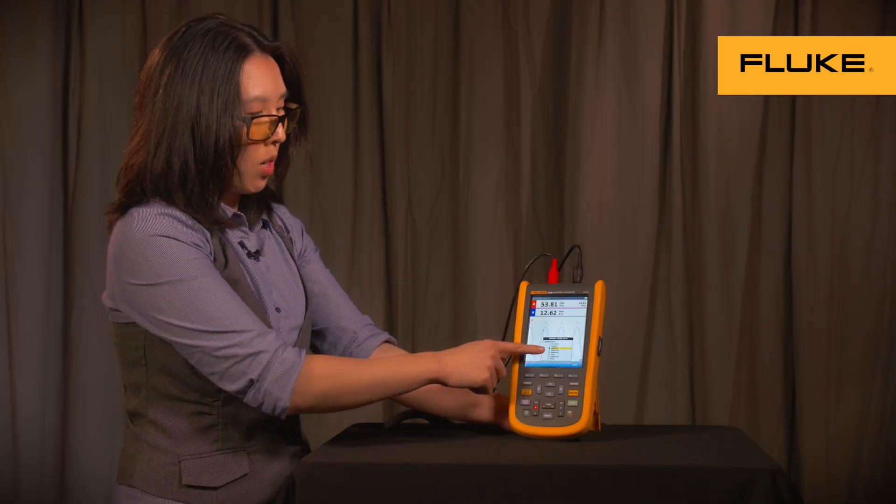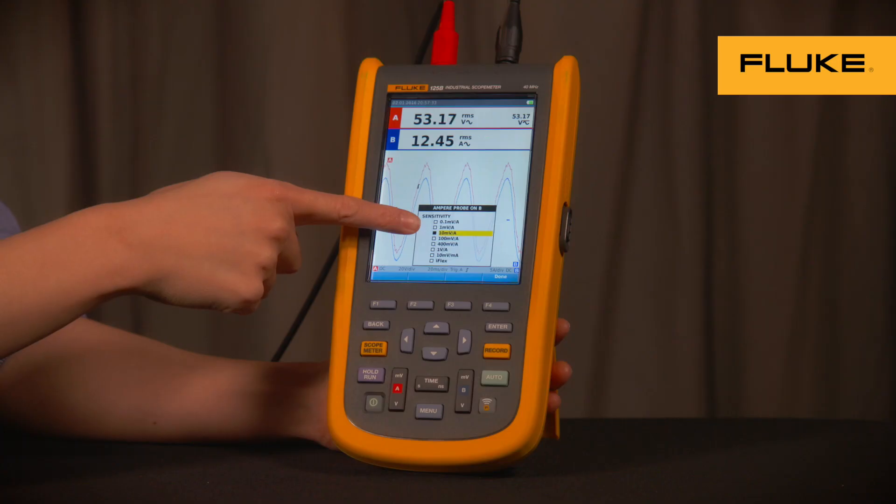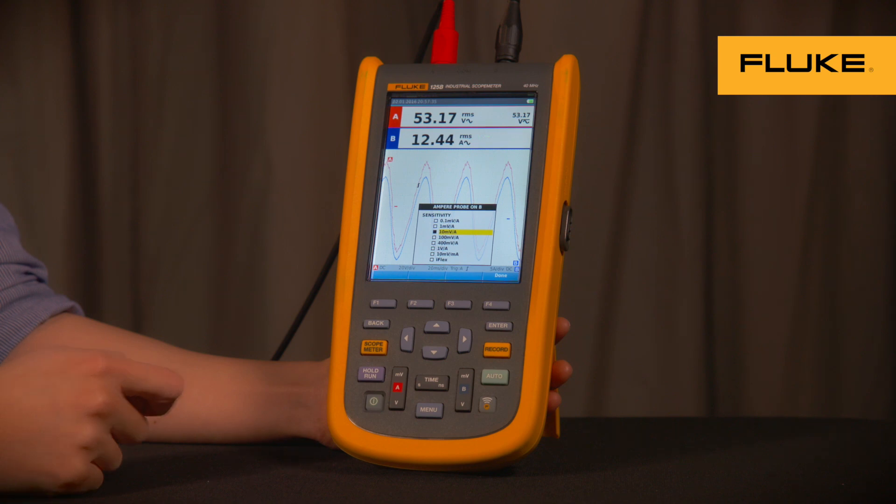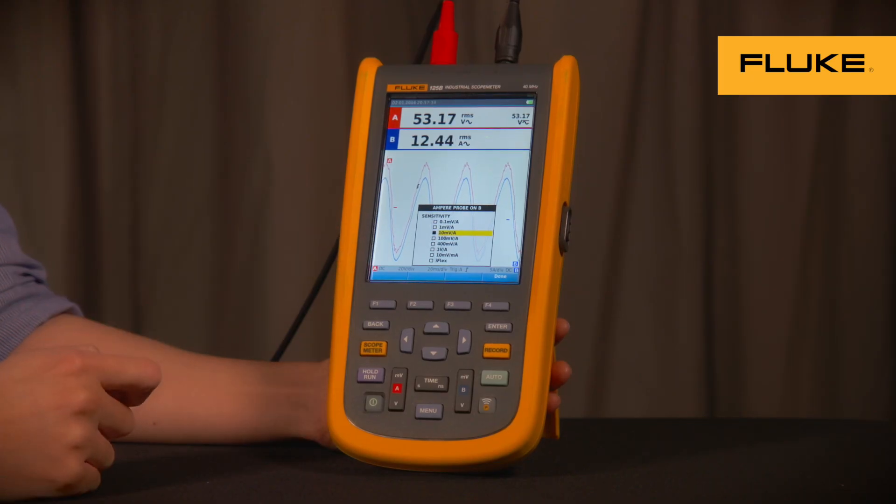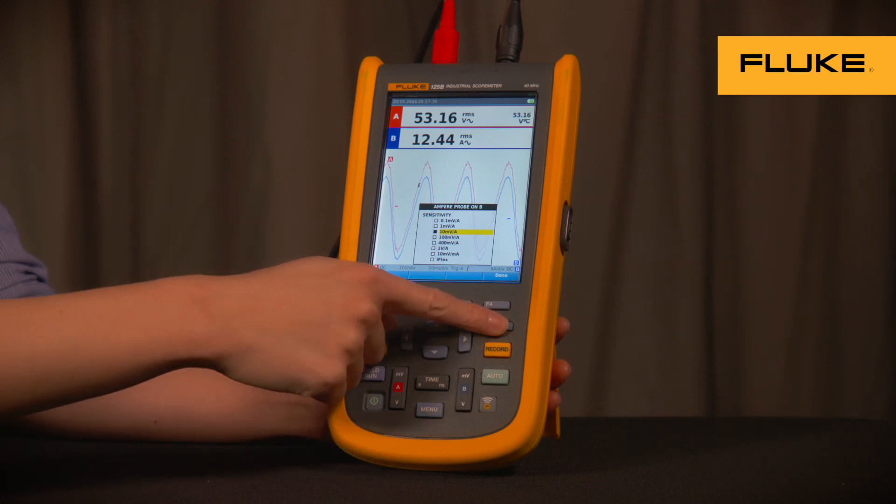For initial setup, make sure you select the right sensitivity for your probes. So in this example, we have the AC current clamp switched to 10 mV per amp, which is highlighted here already. Press the Enter key.